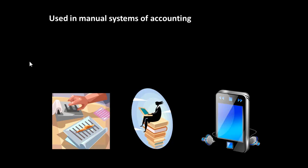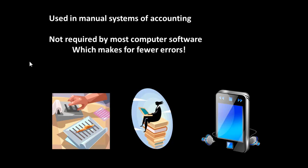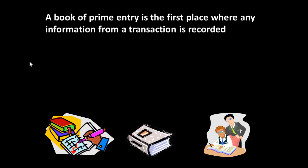We have talked about all the documents that are generated and we now need to think about what happens to these. Well this starts with the books of prime entry. We should say straight away that books of prime entry are used in manual systems of accounting. Most computer software does not require entries of this sort, which has a great advantage because it makes for far fewer errors. However we will go through how the manual system of accounting worked. A book of prime entry is essentially simply the very first place where any information from a transaction is recorded. So we have all these documents and we need to record some information from them and we start then by putting them in a book of prime entry.